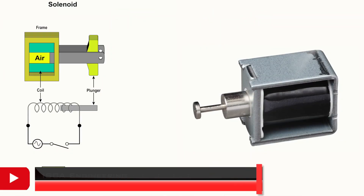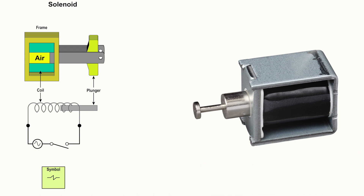A solenoid is a device that is made up of a coil, frame, and plunger. When current is passed through the coil of wire, it exhibits the properties of electromagnetism and a magnetic field is induced within the core and around the coil. When the magnetic field is produced, it attracts the plunger, pulling it into the frame and therefore creating mechanical motion. Solenoids are available in AC and DC, but AC solenoids tend to be stronger in the fully open position due to the inrush current.